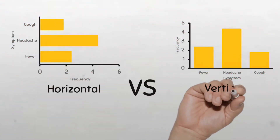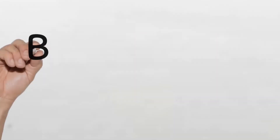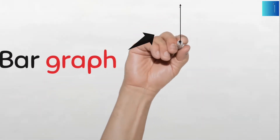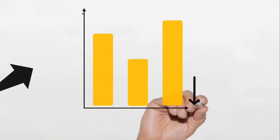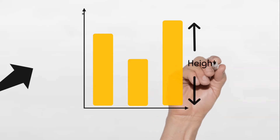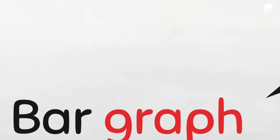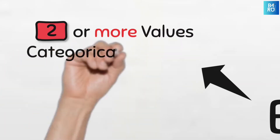Horizontal versus vertical bar graphs. A bar graph is a diagram made up of bars whose heights or lengths represent the frequencies of the different categories of data. It is used to compare two or more values of categorical variables.